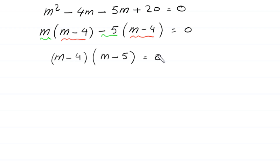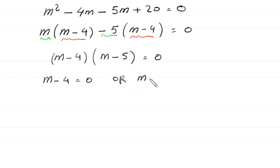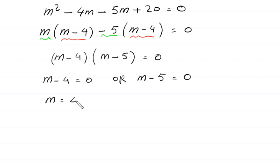Now as (m minus 4) is a common factor, we factor it out to get (m minus 4)(m minus 5) equals 0. From here, either m minus 4 equals 0 giving m equals 4, or m minus 5 equals 0 giving m equals 5.